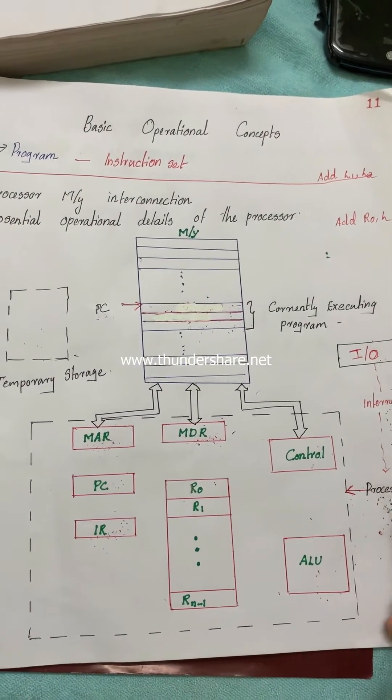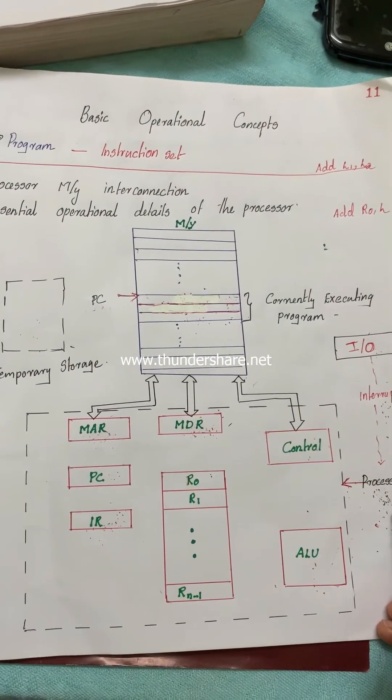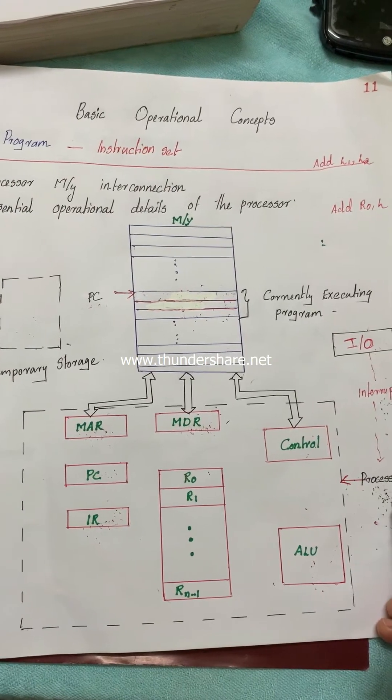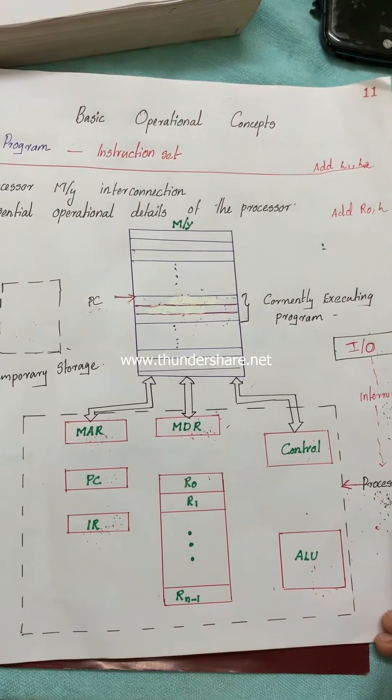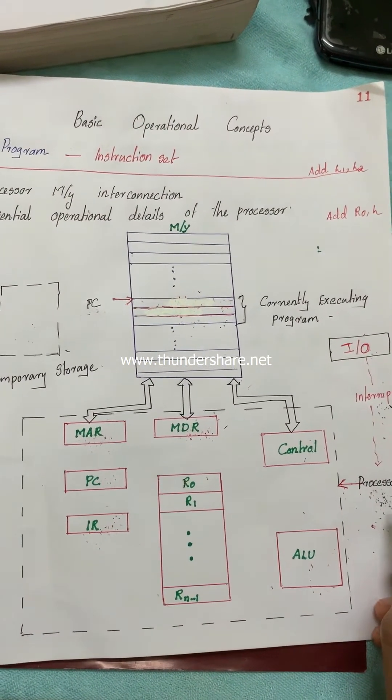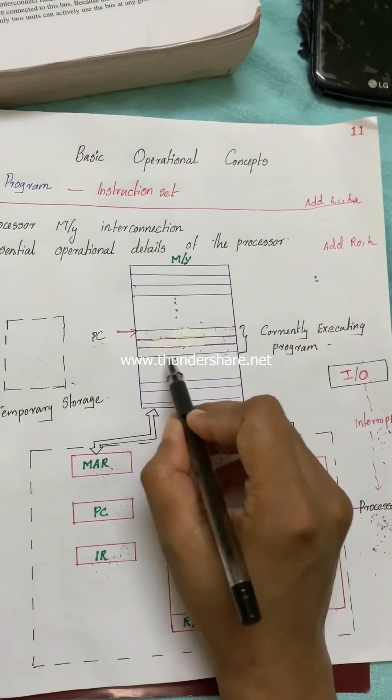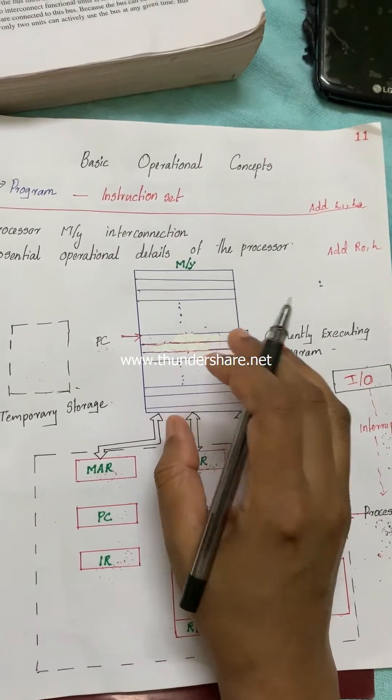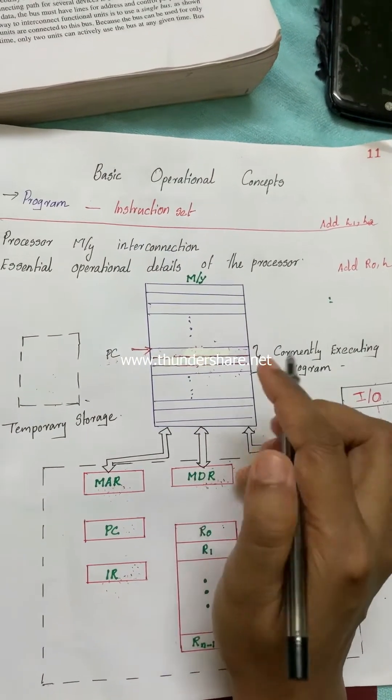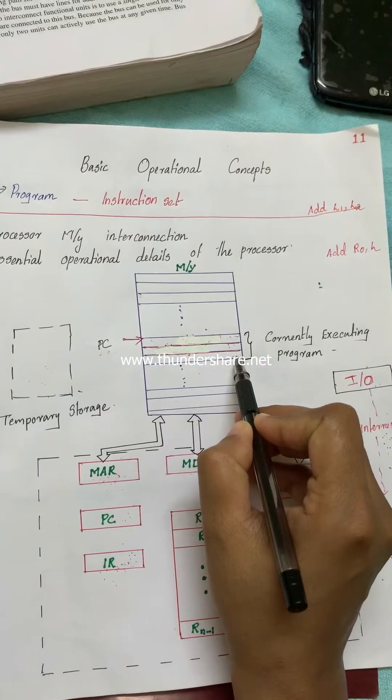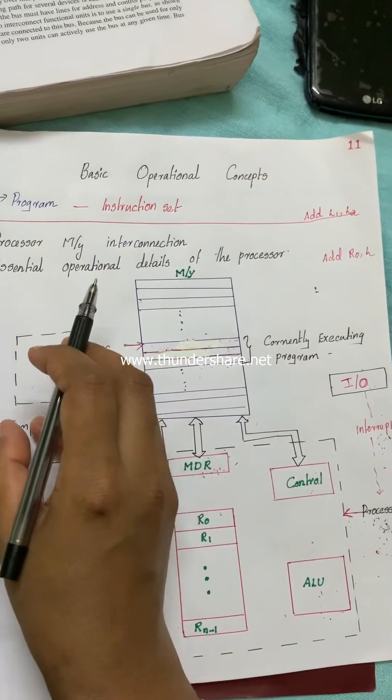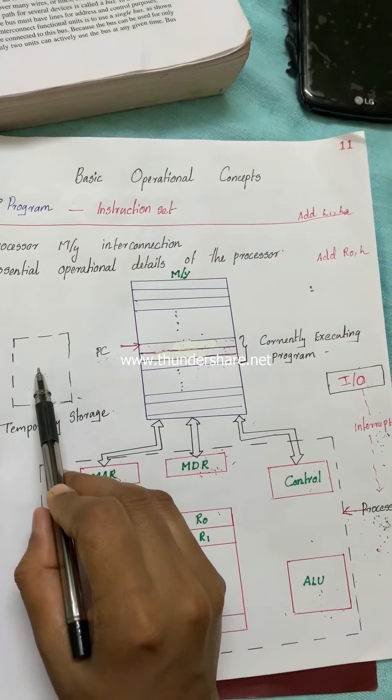At that time, it gets an interrupt request for immediate service. Then in such a situation, what the processor actually wants to do is stop the execution of this program, collect the status information of the currently executing program, and store the status information into a temporary storage space.